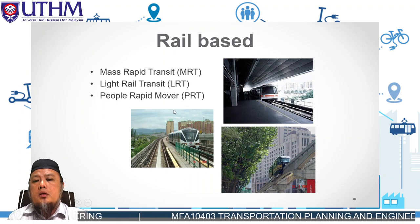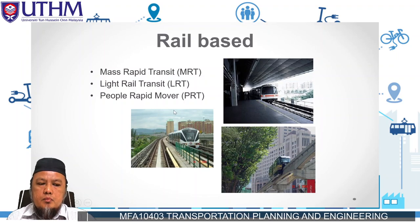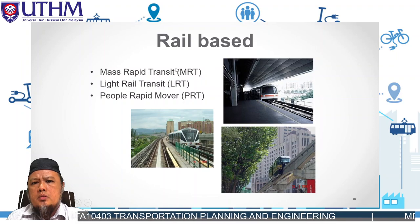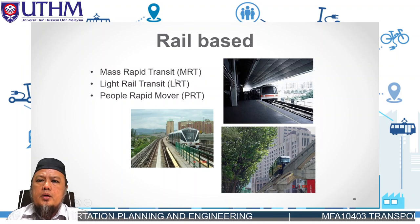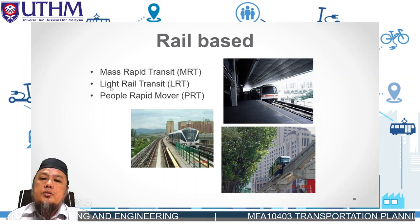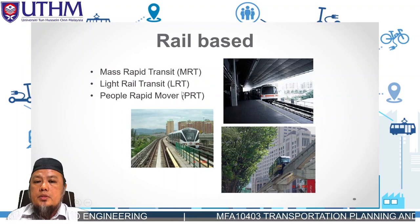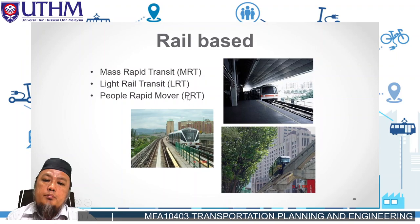Basically in urban areas or urban regions, we focus more on rail-based transport. That's why here you see facilities for rail-based transport such as MRT, which is Mass Rapid Transit; LRT, Light Rail Transit; and PRT, People Rapid Transit or People Mover.